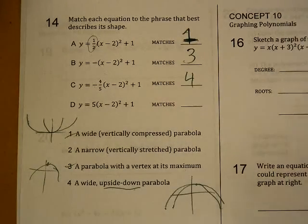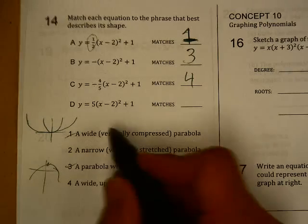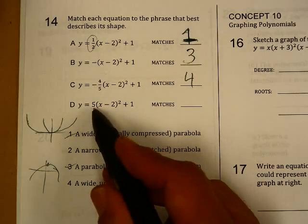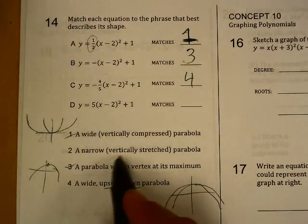We know that number 2 goes here, but let's look at it. We have a vertex at 2, 1. We have a 5, so it's facing upward.